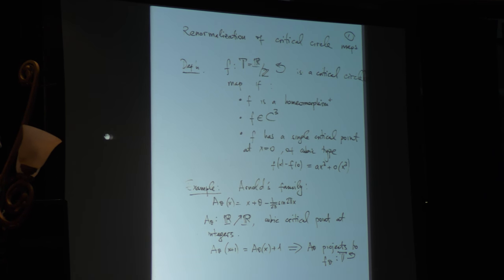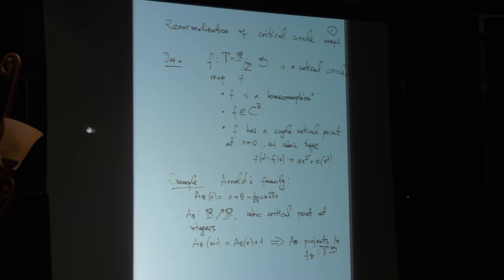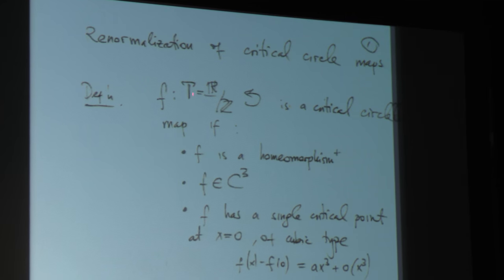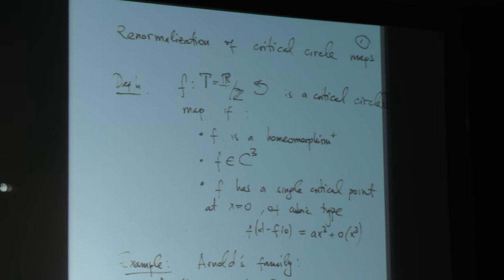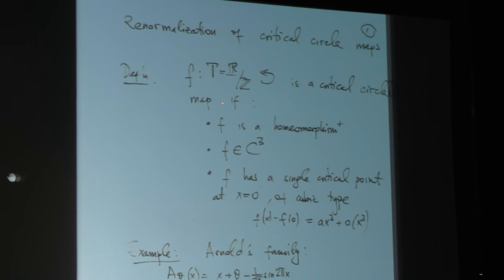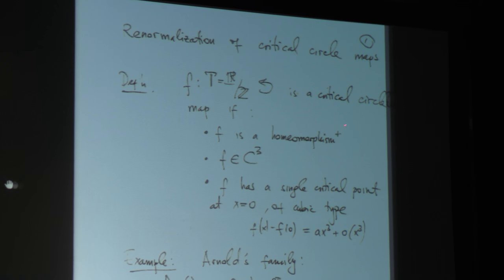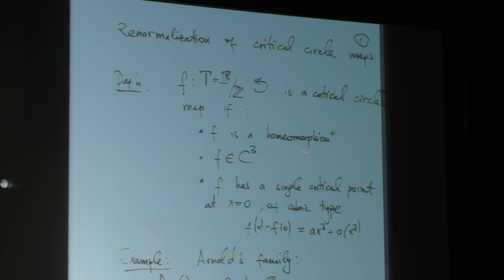Let me review the main definitions of renormalization of critical circle maps. The circle for me will be the quotient T mod Z. I'll say that F is a critical circle map if it's an orientation-preserving homeomorphism, smooth — usually at least C3 — with a single critical point, which I'll always put at the origin, and which is of the cubic type.